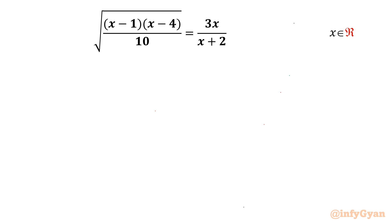Welcome back to Infigyan friends. Today in this video we are going to take up another interesting radical equation challenge. It is square root of (x minus 1)(x minus 4) over 10 equal to 3x over (x plus 2). x belongs to real numbers. So let us get started by writing the domain first.